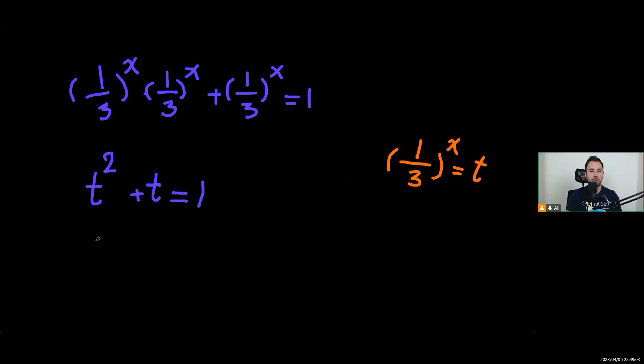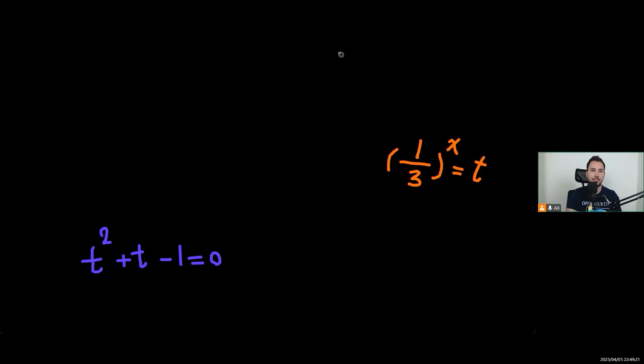I'm going to move 1 to the left-hand side, it will be t squared plus t minus 1 equals 0. From here I'm going to use quadratic formula negative b plus minus. You just know the equation, right? If you forgot, look it up, quadratic formula.